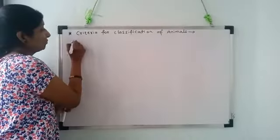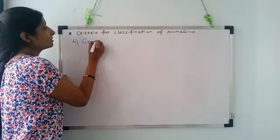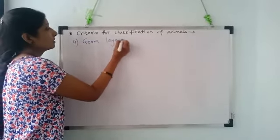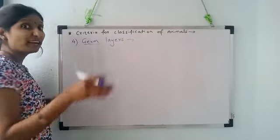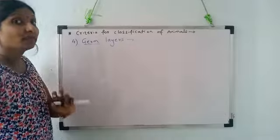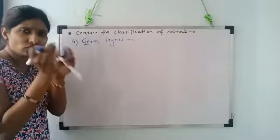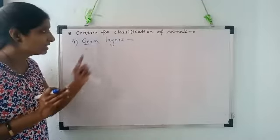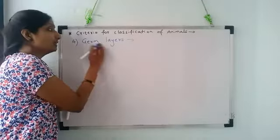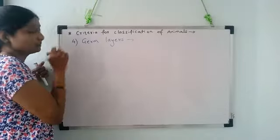Fourth criteria for classification of animal is germ layers. Now germ doesn't mean pathogens, bacteria and all that. Here germs means body cells in the embryonic stage. When we are embryo in mother's uterus, just a mass of cells or a mass of tissue, that is called germ layers.